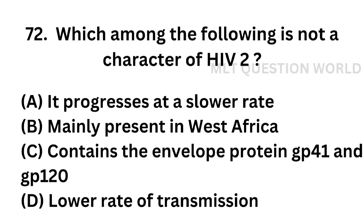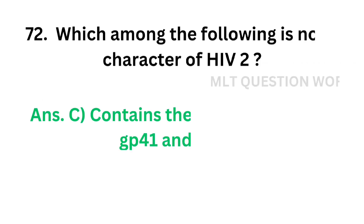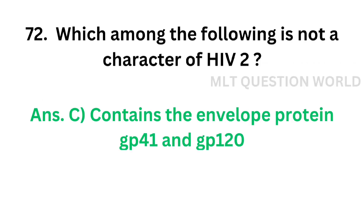Question 72. Which among the following is not a character of HIV-2? Option A: It progresses at a slower rate. Option B: Mainly present in West Africa. Option C: Contains the envelope protein GP41 and GP120. Option D: Lower rate of transmission. The correct answer is Option C. The envelope proteins of HIV-2 are GP125 and GP36, not GP41 and GP120.